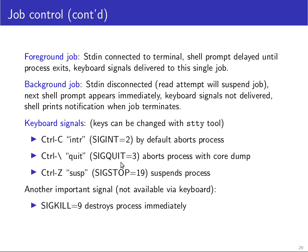A more brutal way of terminating a process is pressing Ctrl+\, which sends the quit signal (SIGQUIT). This can be useful for debugging because it not only immediately terminates the process — it also causes the kernel to take the entire memory of the process and write it out to a so-called core dump file. These are often called 'core' or 'core' with the process ID as a suffix, and you can use a debugger to inspect the program's state at the time you aborted it with SIGQUIT.